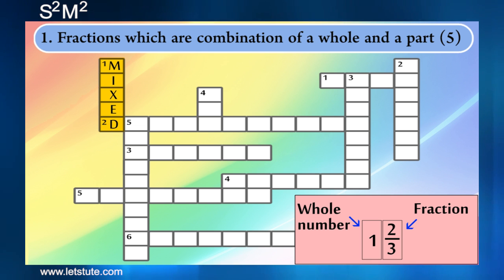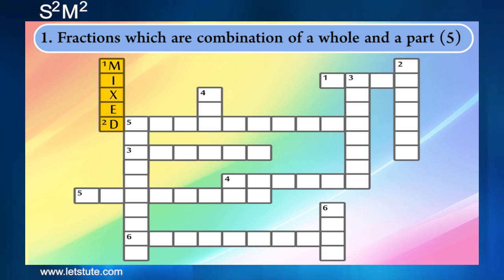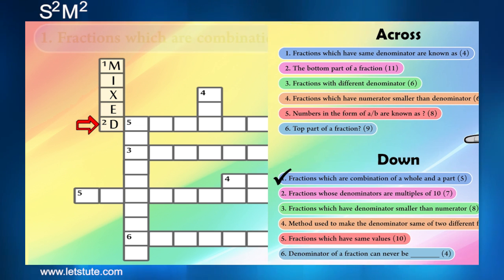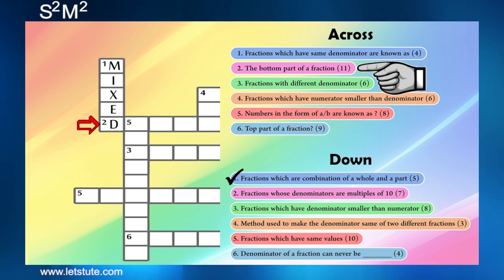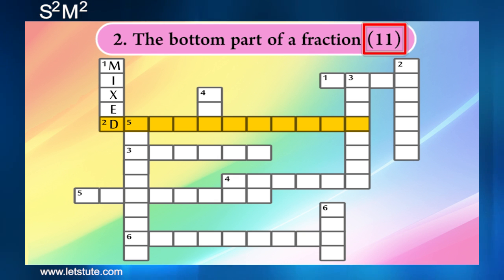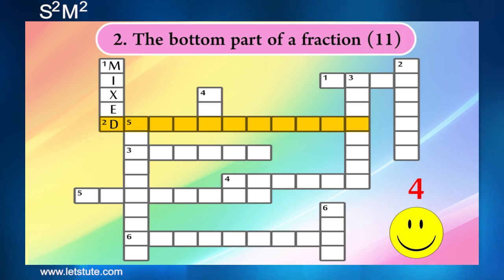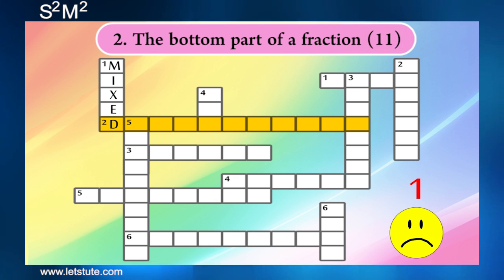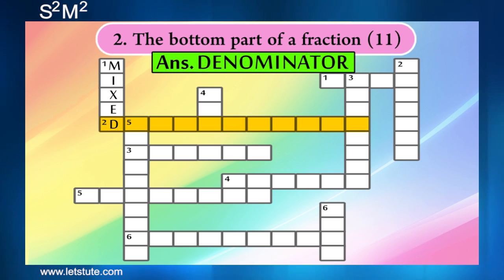Since we have the first letter of the second word in a cross, we will see what the question is. And the question says the bottom part of a fraction. We all know this is very simple and the answer is denominator.